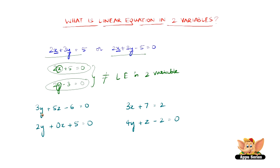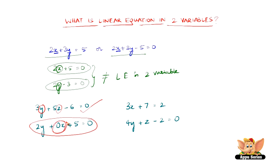The first one, 3y plus 5z minus 6 equal to 0, clearly has two variables y and z, so it is a linear equation in two variables. Now consider 2y plus 0x plus 5 equal to 0. Here, 0x is as good as 0 itself, so it might as well not exist. We can write this as 2y plus 5 equal to 0, which is a linear equation in just one variable.